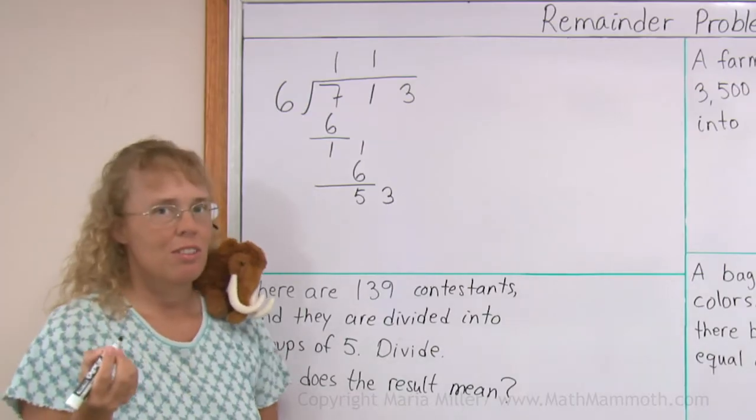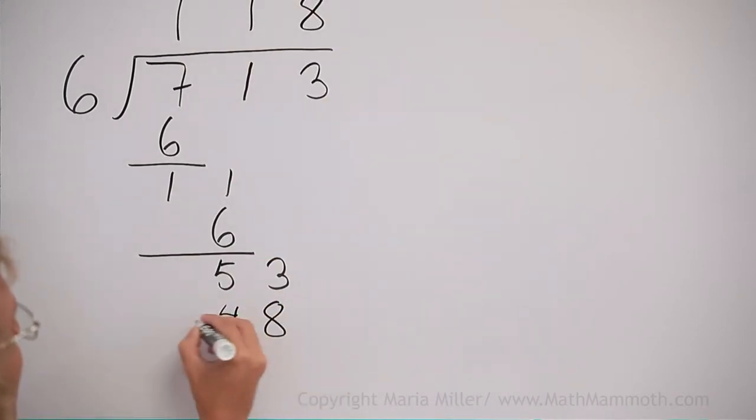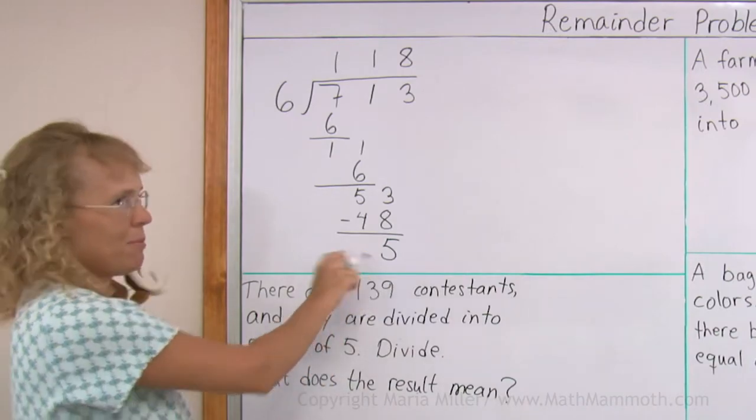6 goes into 53 eight times. We get 48, subtract, and 5. So that's our remainder.